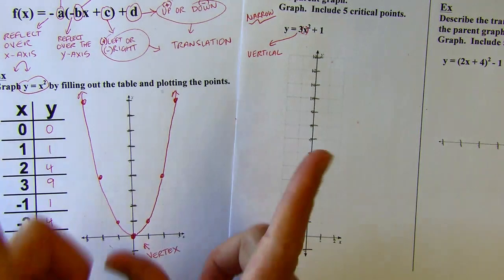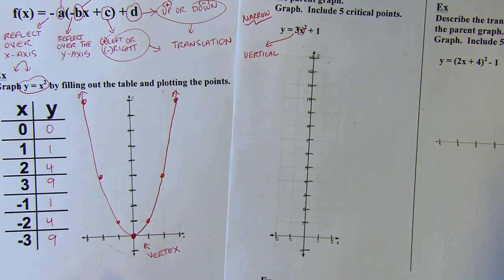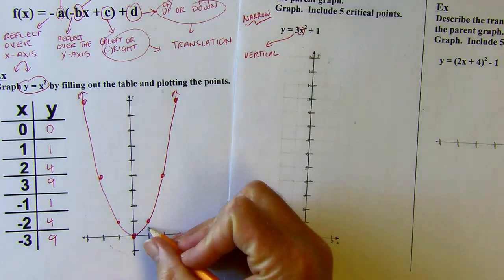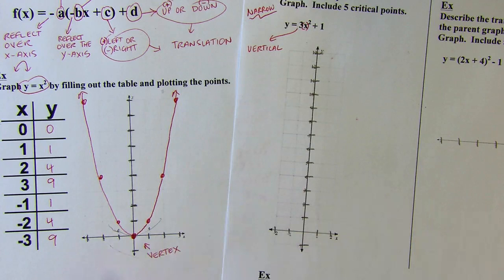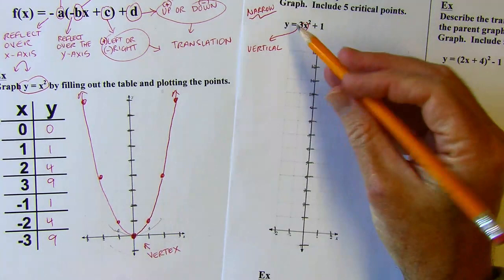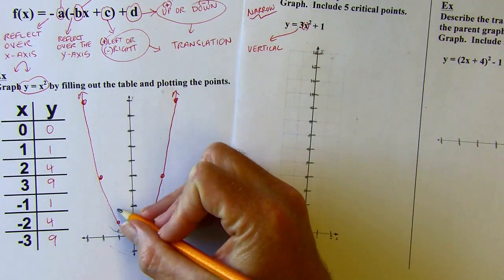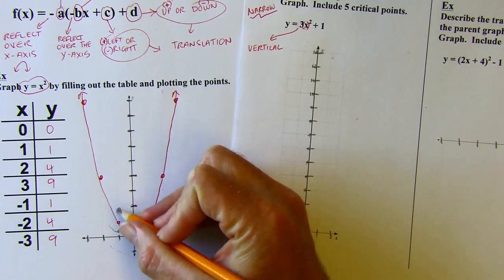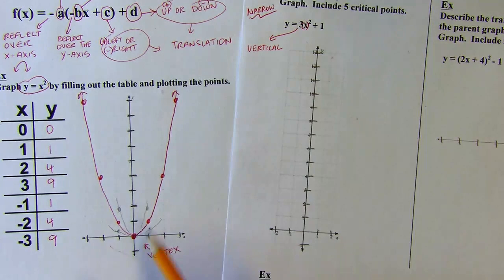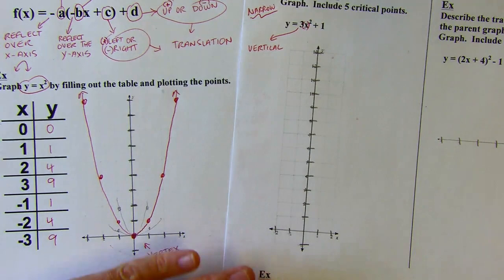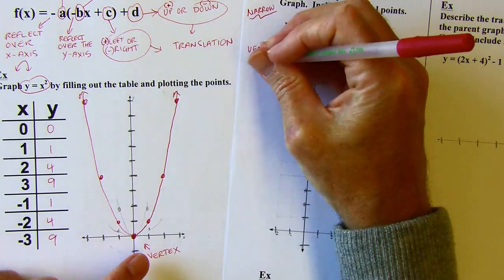Moving those points up gives a narrower parabola, so this is a vertical stretch. I still have to deal with the plus one, which is on the outside — it's not being squared. So that's going to move everything up one: a vertical stretch by a factor of 3, and a translation up 1.